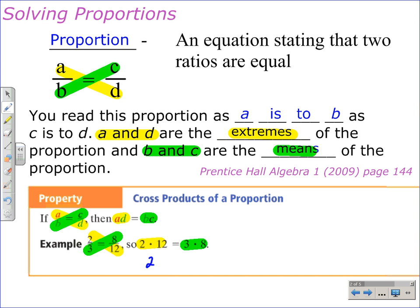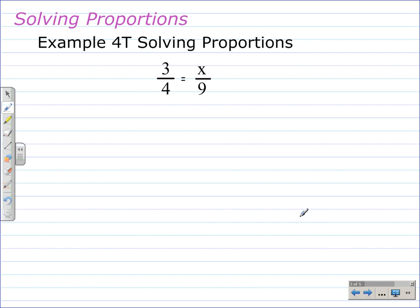And if we simplify this a little bit, 2 times 12 is 24 and we know 3 times 8 is 24. So we can see that the cross products are equal, and we're going to use that fact to solve a proportion.